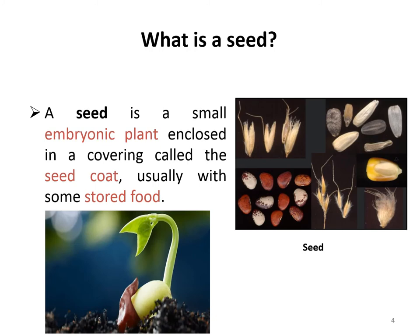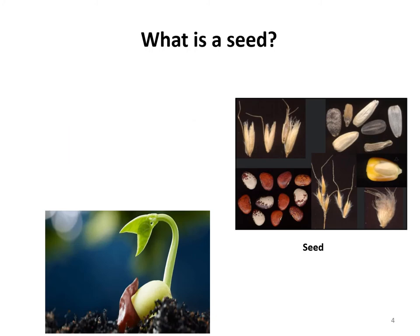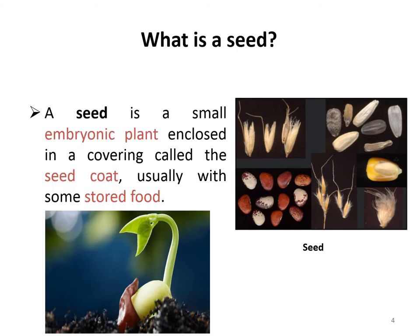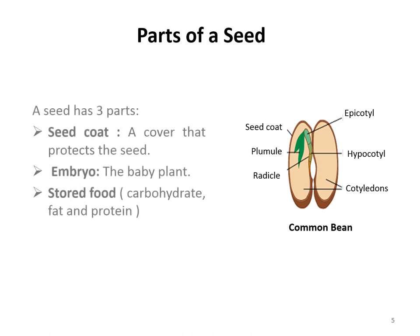What is a seed? A seed is a small embryonic plant enclosed in a covering called the seed coat, usually with some stored food. A seed contains an embryo — a tiny living plant — along with stored food and a coat. The stored food, which may be in the form of carbohydrate, fat, and protein, nourishes the young plant from the time it starts to grow until it can produce its own food by photosynthesis.